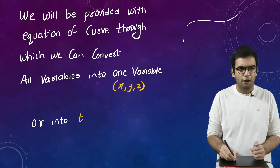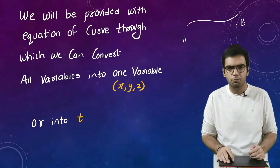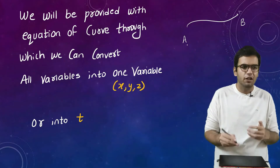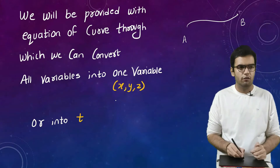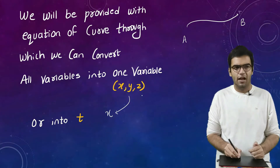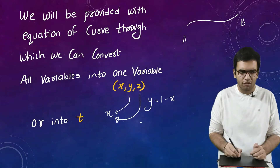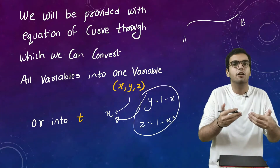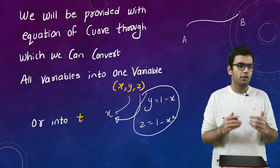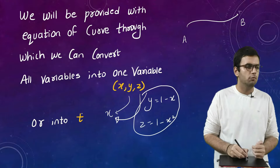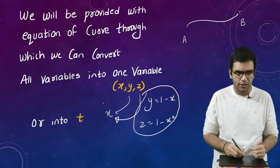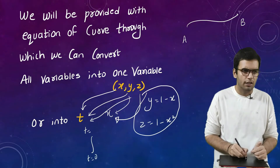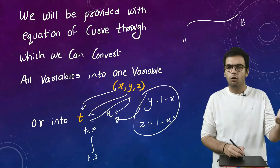Using the equation of the curve, we convert the variables into one form. For example, we can express y and z in terms of x — say y = 1−x and z = 1−x² — and then use the limits of x. This is one way to solve the numericals. The second way is to convert all three variables into a fourth variable t, giving x, y, z as functions of t, and use limits in t.